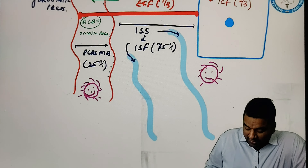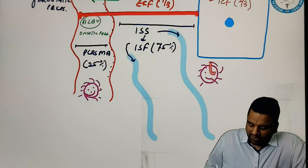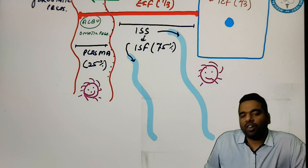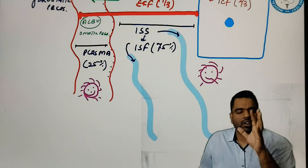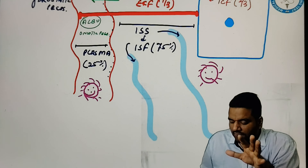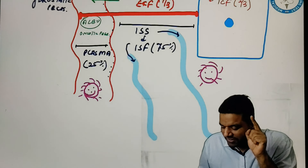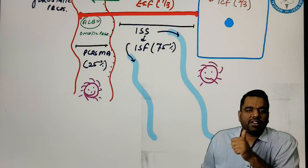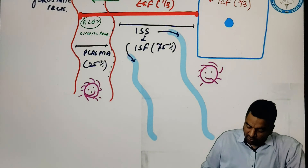So if the lysosome wants to act on this bacteria, this bacteria first of all should go inside of the cell. And this process, when this bacteria is being taken inside of the cell, this is called as endocytosis. And this endocytosis will be of two types: pinocytosis or phagocytosis.